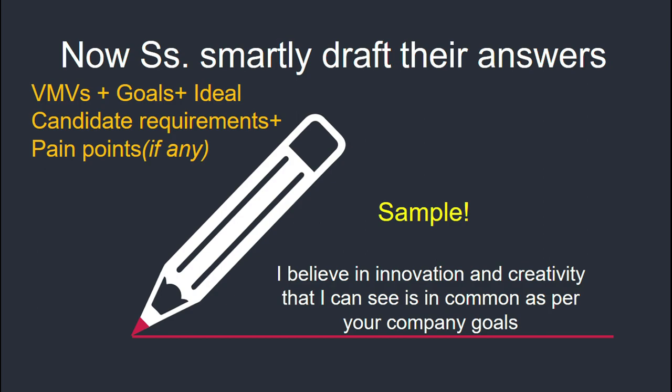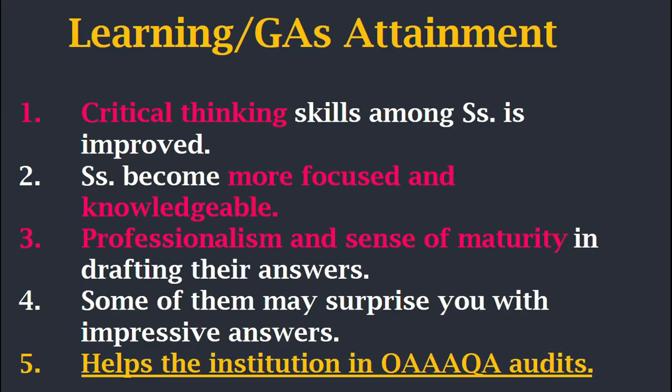Students can create better answers than my sample, and they really did. What is the learning — the graduate attribute attainment? Their critical thinking skill is improved because they are discussing why they should understand the VMVs, what is the value of a goal statement. It's not just 'I need a job, I need money, I'm excited, I'm done with graduation.' No — you have to understand the seriousness of the business. It helps improve their professional attitude.